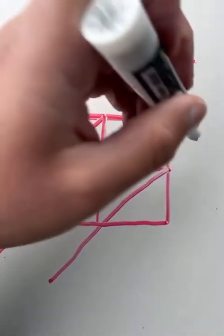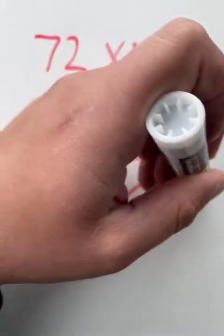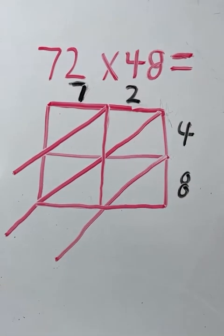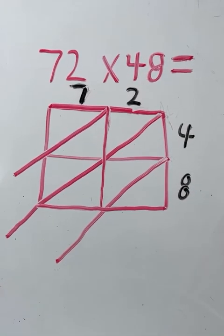So we have 72 going along the top, 48 going along the side, and we're now going to solve this problem using the Lattice method.